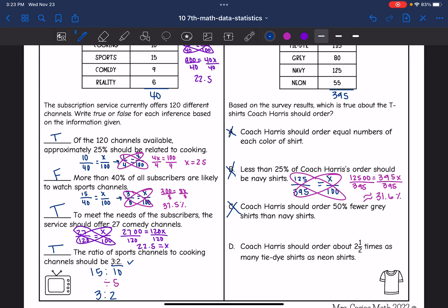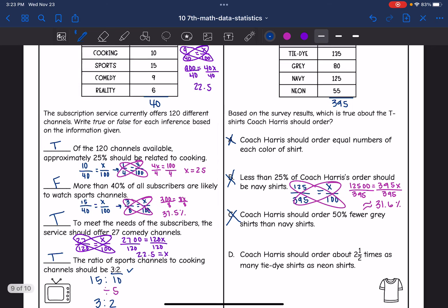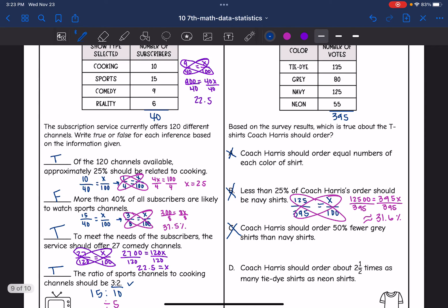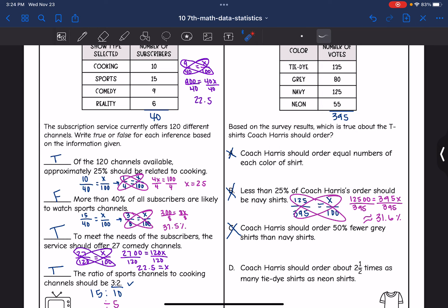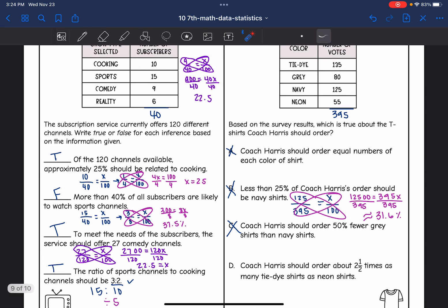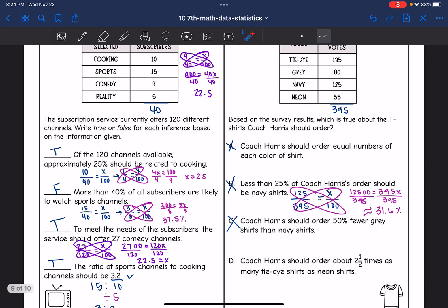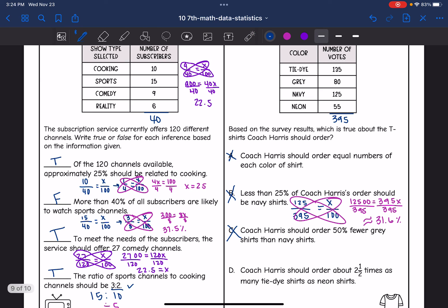And then D says Coach Harris should order about two and a half times as many tie-dye shirts as neon shirts. So neon shirts, 55 people selected that. And let's figure out what 55 times 2.5 would be. 55 times 2.5 would be 137, which is really close to the tie-dye shirts. So I would say that is true. She should order about two and a half as many tie-dye shirts as neon shirts.